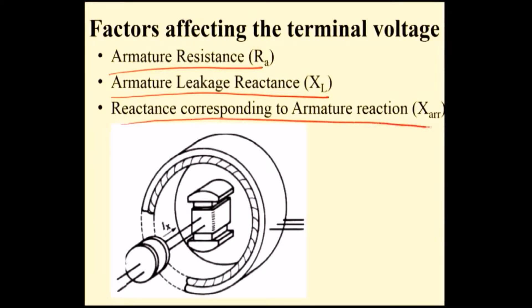The third one is reactance corresponding to armature reaction. You are rotating the field system, so EMF will induce and the EMF is available across the terminal. That EMF is supposed to be constant whatever may be the load, from zero load to full load it should be constant. But in a practical synchronous generator it will not be constant because these three factors affect the terminal voltage.